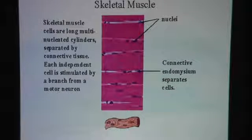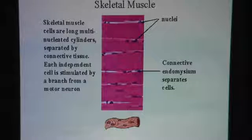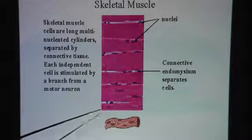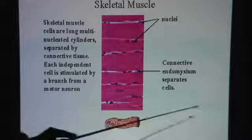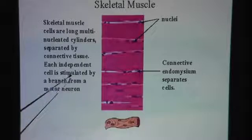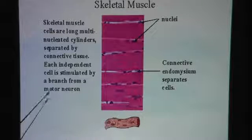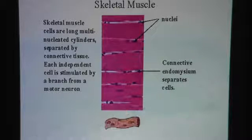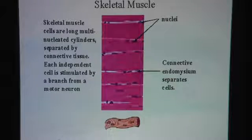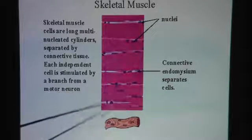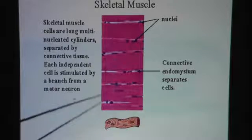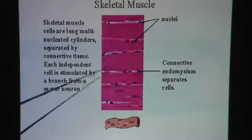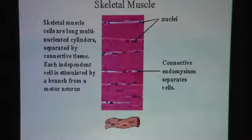Here you have another glimpse of the skeletal muscle tissue. As you can see, these are long muscle fibers running parallel to each other. In terms of direction perpendicular to the length of the muscle fibers, you will find the striations — these stripes.